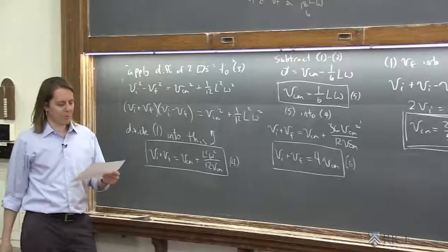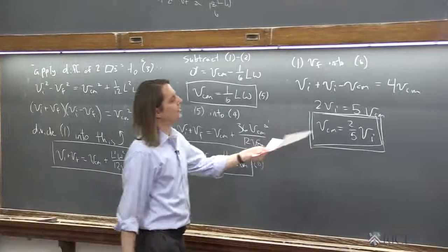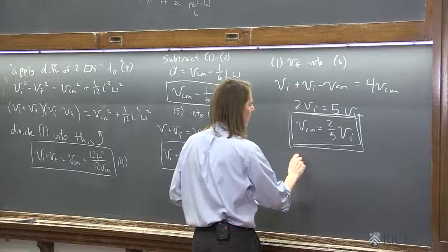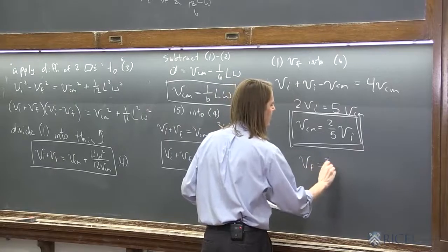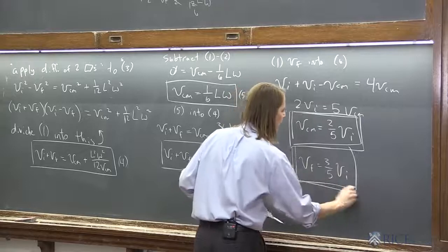And once you get one of them, the rest starts falling apart pretty fast. For example, once we have that vcm is 2/5 vi, we go back to equation 1. Therefore, vf must be 3/5 vi. Let's plug it in right away. It must be 3/5 vi is our other answer.